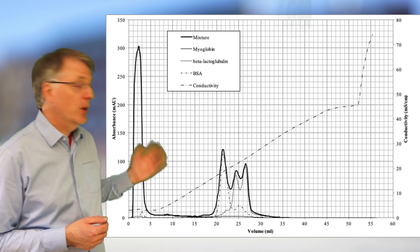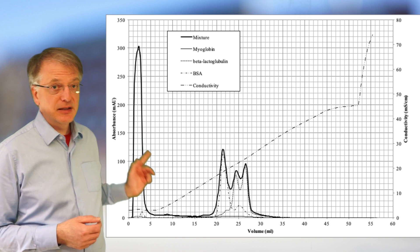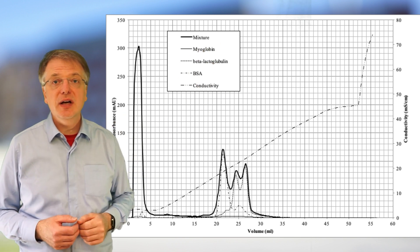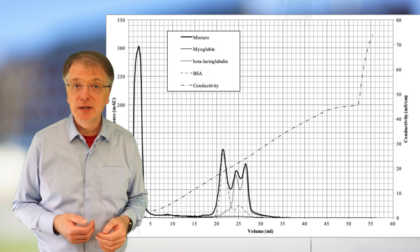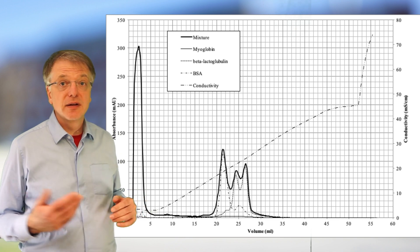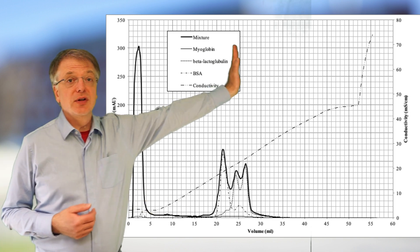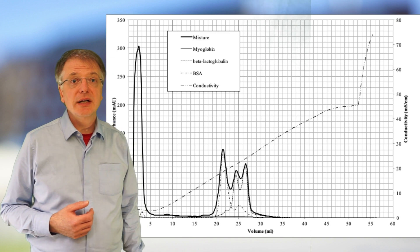First a few words on what we see in this chromatogram. The dashed line that increases with time is the measurement of the conductivity and you can see the values of conductivity on the y-axis to the right.